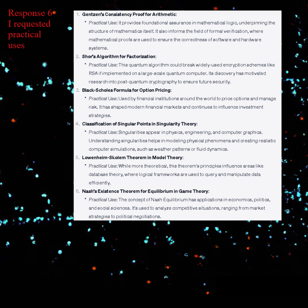It also informs the field of formal verification, where mathematical proofs are used to ensure the correctness of software and hardware systems. Shor's Algorithm for Factorization — practical use: this quantum algorithm could break widely used encryption schemes like RSA if implemented on a large-scale quantum computer. Its discovery has motivated research into post-quantum cryptography to ensure future security. Black-Scholes Formula for Option Pricing — practical use: used by financial institutions around the world to price options and manage risk. It has shaped modern financial markets and continues to influence investment strategies.